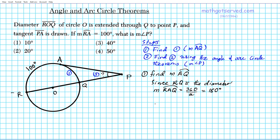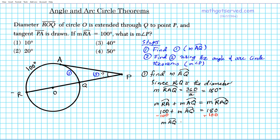So we set up the equation: the measure of arc RA, which is 100 degrees, plus the measure of arc AQ equals 180. Subtracting 100 from both sides gives us the measure of arc AQ equals 80 degrees. So that arc is 80 degrees.